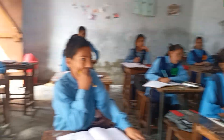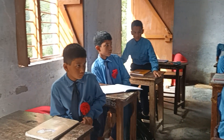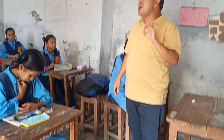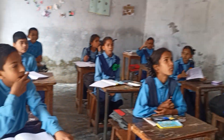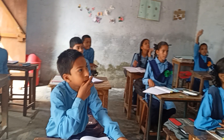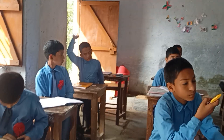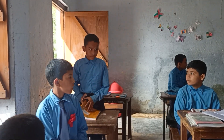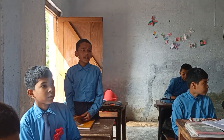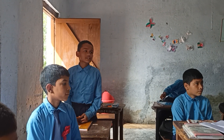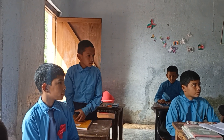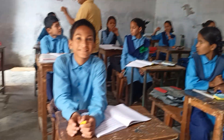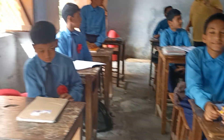Next question for you all. How many consonants are there in the English alphabet? How many consonants are there in the English alphabet? There are 21 consonants in the English alphabet. Very good answer.